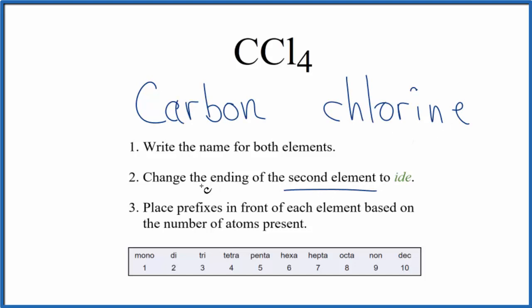Next, on the second element, we're gonna change the ending to ide. So at this point, we have carbon chloride, but we need to show that we have four of these chlorine atoms here.